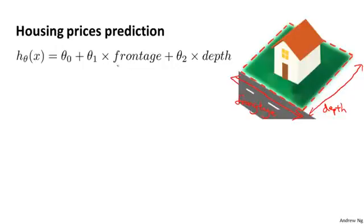You might build a linear regression model like this, where frontage is your first feature x1 and depth is your second feature x2. But when you're applying linear regression, you don't necessarily have to use just the features x1 and x2 that you're given. What you can do is actually create new features by yourself.